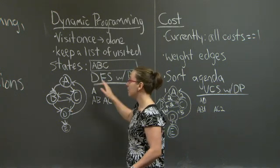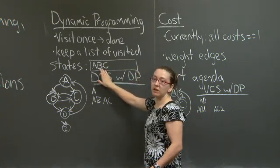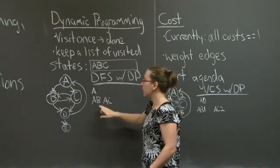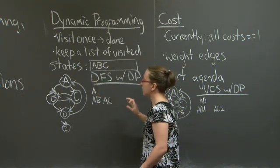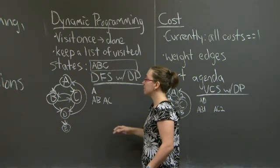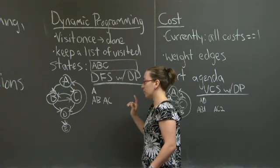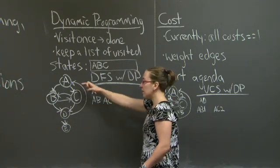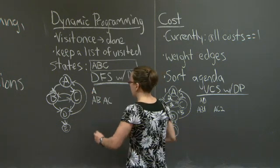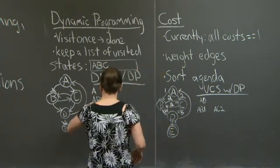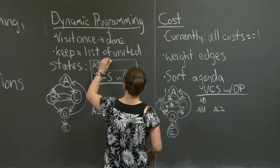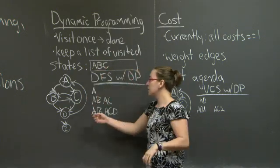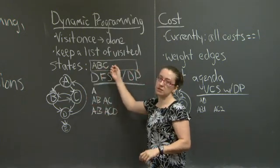However, B is already in my list of states that I visited, because it's already in one of the partial paths in my agenda. So I'm not going to visit B again. Instead, I'm only going to add one new partial path to my agenda, A, C, D. I'm also going to add D to my list of visited states.